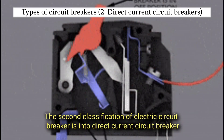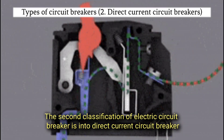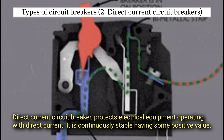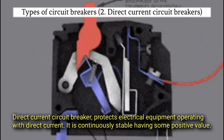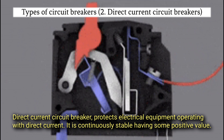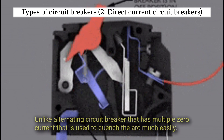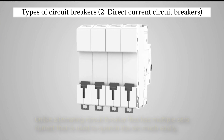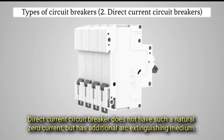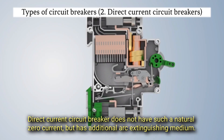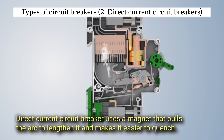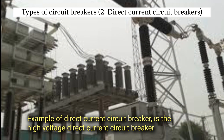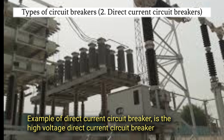The second classification of electrical circuit breaker is the direct current circuit breaker. Direct current circuit breaker protects electrical equipment operating with direct current. It is continuously stable having some positive value. Unlike AC circuit breakers that have multiple zero currents used to quench the arc much easily, direct current circuit breakers don't have such neutral zero currents, but have additional arc extinguishing mediums. DC circuit breakers use a magnet that pulls the arc to lengthen it and makes it easier to quench. An example of a direct current circuit breaker is the high voltage direct current circuit breaker.